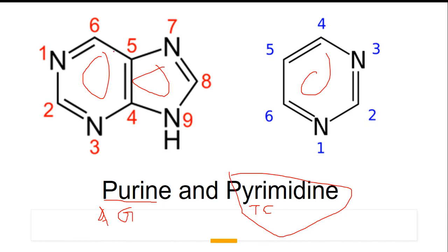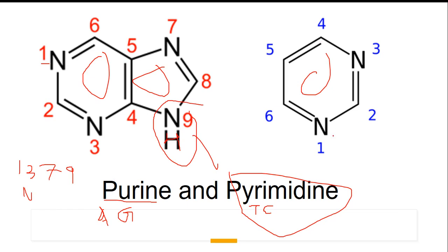To draw the purine structure, first make one benzene ring and then attach a five-carbon ring. The carbon numbering starts here: one, two, three, four, five, six, seven, eight, nine. On positions one, three, seven, and nine there will be nitrogen. The ninth carbon is attached with the ribose sugar. For pyrimidines, there is one ring with carbons numbered one through six; positions one and three have nitrogen, and the first carbon is joined with the ribose sugar.